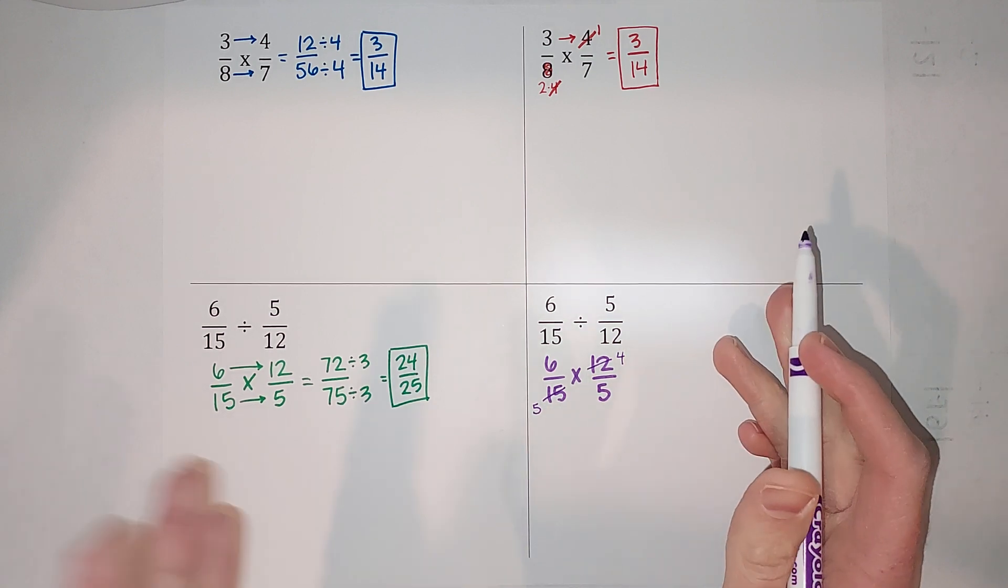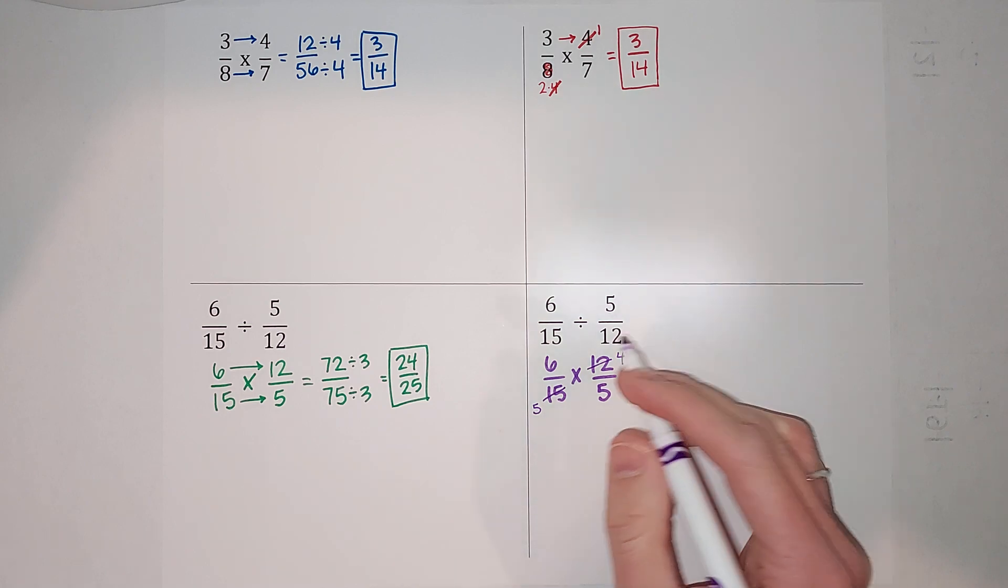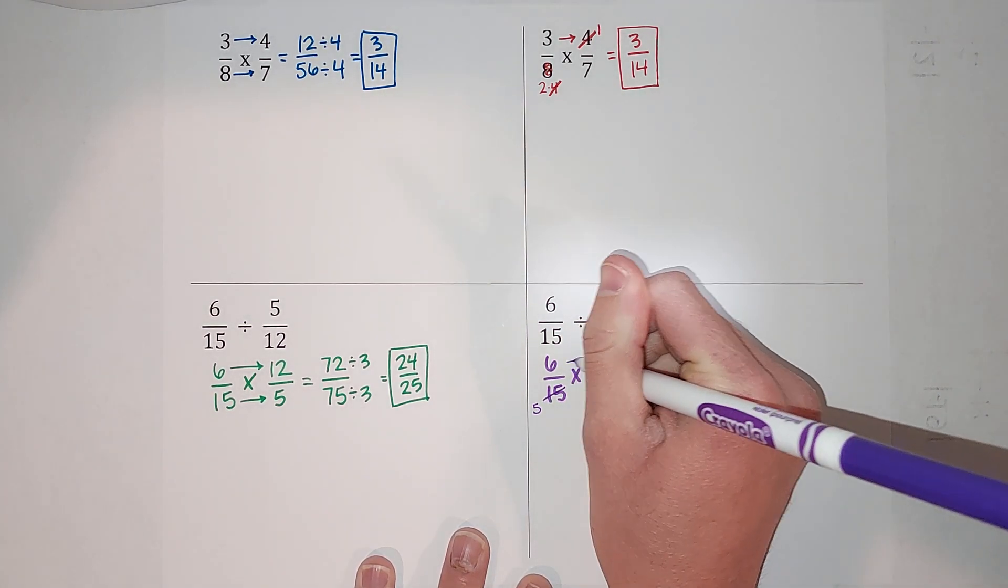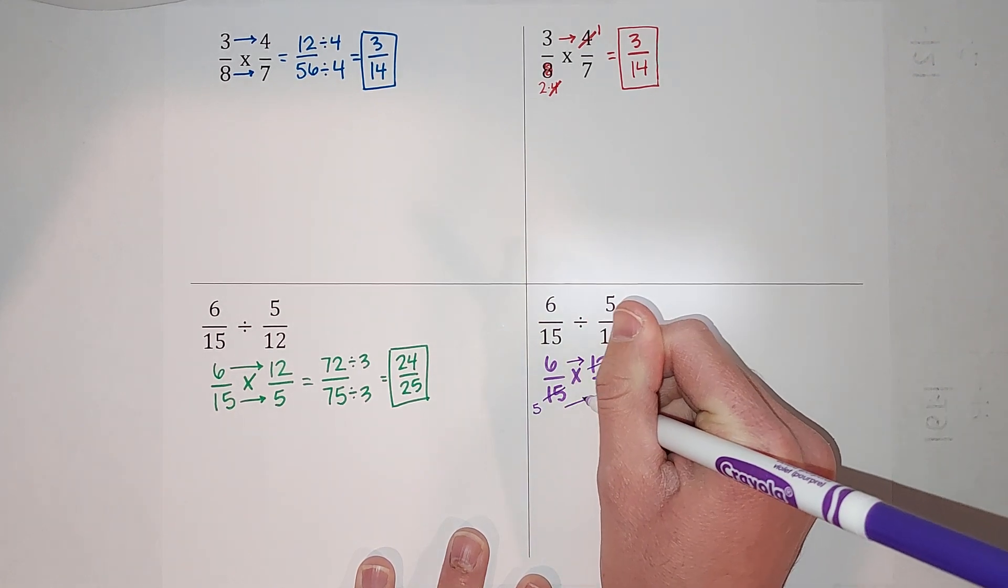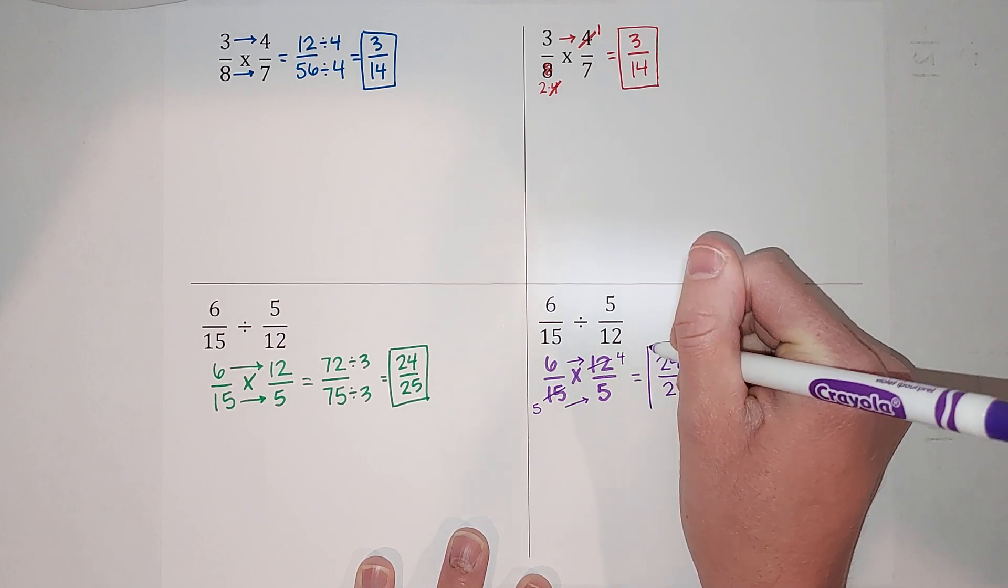Now we're going to multiply across. So 6 times 4 gives me 24, and 5 times 5 gives me 25. Done. Again, always just double check to see that it doesn't simplify further, but then you're done.